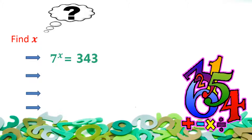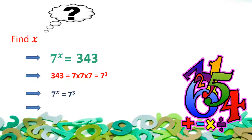Let's do some more practice. What will be x if 7 raised to power x is equal to 343? Now, 343 is equal to 7 into 7 into 7, which is equal to 7 raised to power 3, or 7 cube. So 7 raised to power x is equal to 7 cube. Comparing indices, x is equal to 3, which is the required value of x.